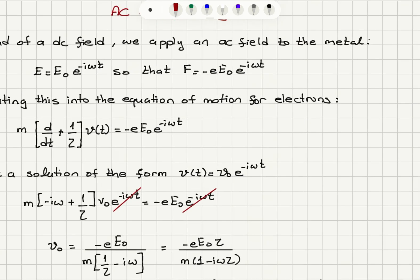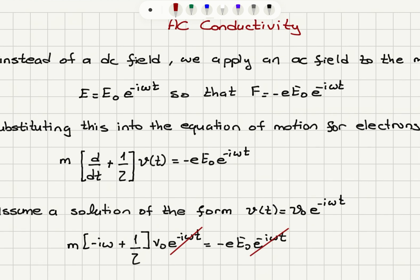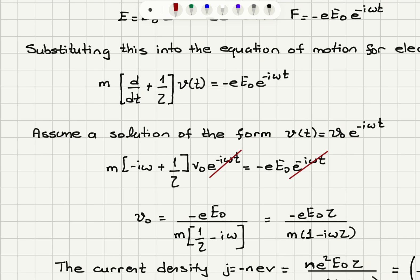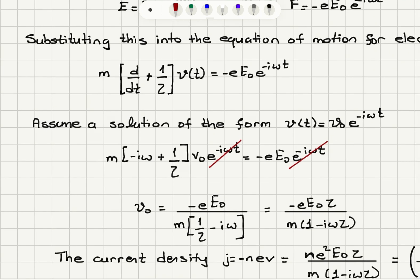If we substitute this force into the equation of motion for electrons, we have m dv/dt plus mv over tau, the collision term, equal to minus e times E0 e to the minus i omega t, the force term. The net external force is due to the oscillatory electric field that we apply. We assume a solution in the form V0 e to the minus i omega t for velocity, so it's an oscillatory velocity. The first derivative with respect to time gives us minus i omega, so we have minus i omega plus 1 over tau in parentheses times mV0 e to the minus i omega t equals minus e times E0 e to the minus i omega t.